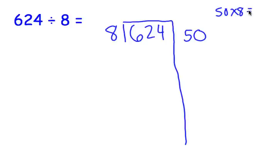I'm going to take out 400 from this original number, subtract it out. 4 minus 0 is 4, 2 minus 0 is 2, 6 minus 4 is 2. We're left with 224.